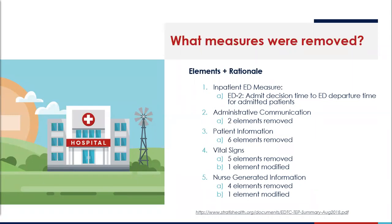Number five is nurse-generated information. There were four elements removed: catheter, immobilization, respiratory support, and oral limitations. Those were routinely being communicated with good processes in place. It's important to recognize that catheter, oral limitations, and immobilization are included in the assessment under intervention and response. Lastly, sensory status is being modified and included in the mental status orientation section as well.